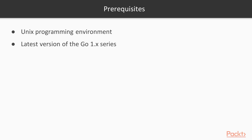To run examples in this course, you need a Unix programming environment, the latest version of the Go 1.x series, an internet connection, and permission to install additional packages. I can't wait to get started. Let's begin this journey.